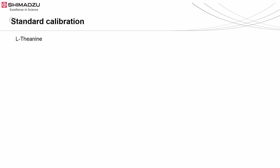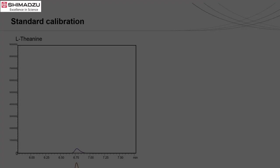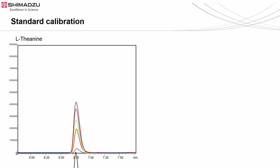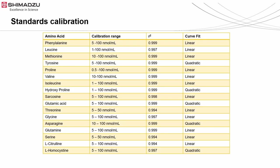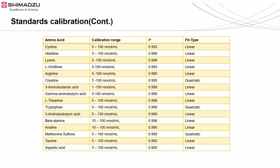Next, let's look at the standard calibration. This is an overlay MRM chromatogram of 6 levels L-theanine standards. It shows a good linearity with R-squared value of 0.999. Most of the amino acids are detected with good linearity. Although a few of the amino acids were detected with quadratic response.